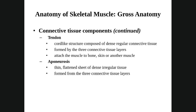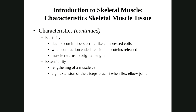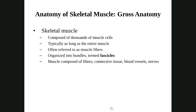A skeletal muscle is composed of muscle cells or fibers, connective tissue, blood vessels, and nerves. The connective tissue holds the fascicles together — sometimes it's fat. Blood vessels are needed because muscles are highly metabolic. And because muscles are excitable and conductive, we need nerves. So those are the four things that make up a muscle: cells or fibers, some CT, some blood vessels, and some nerves.